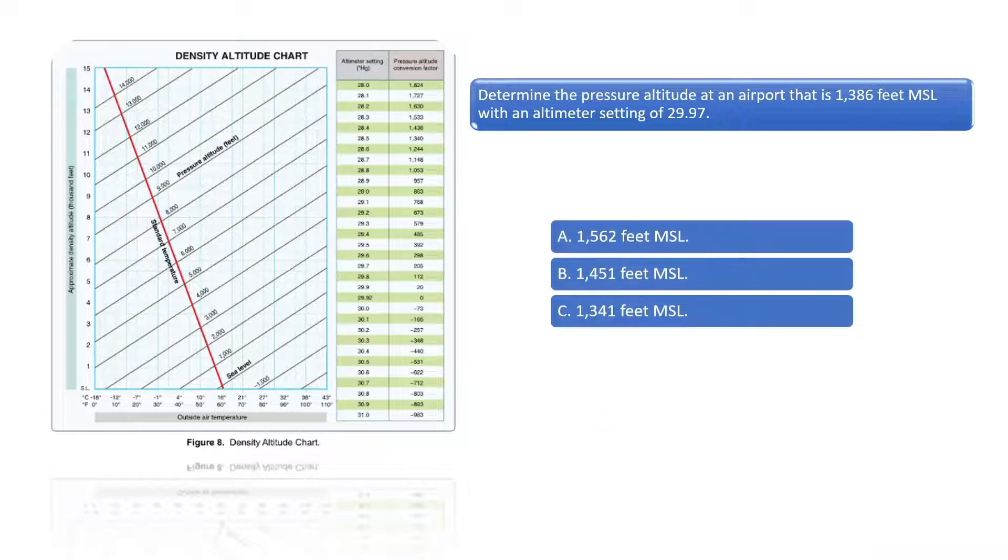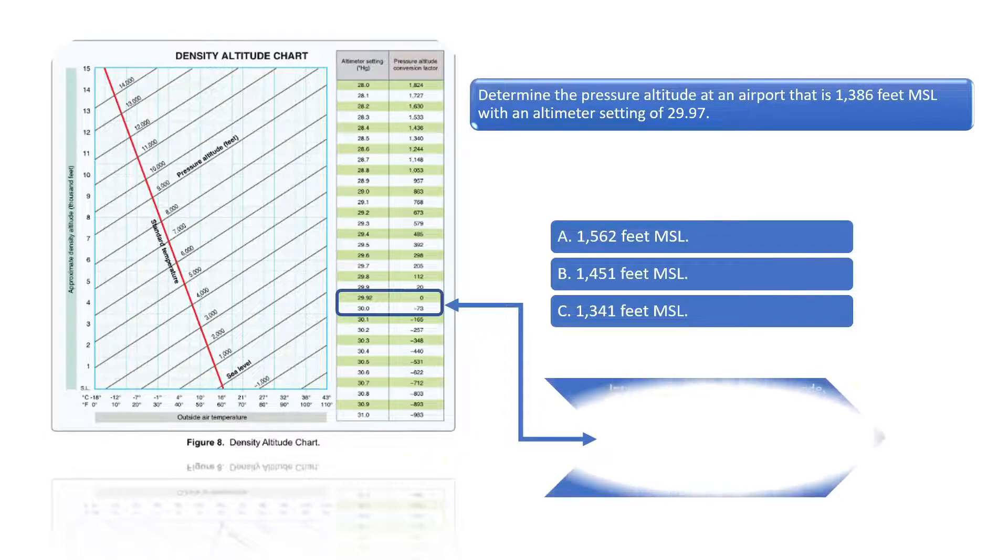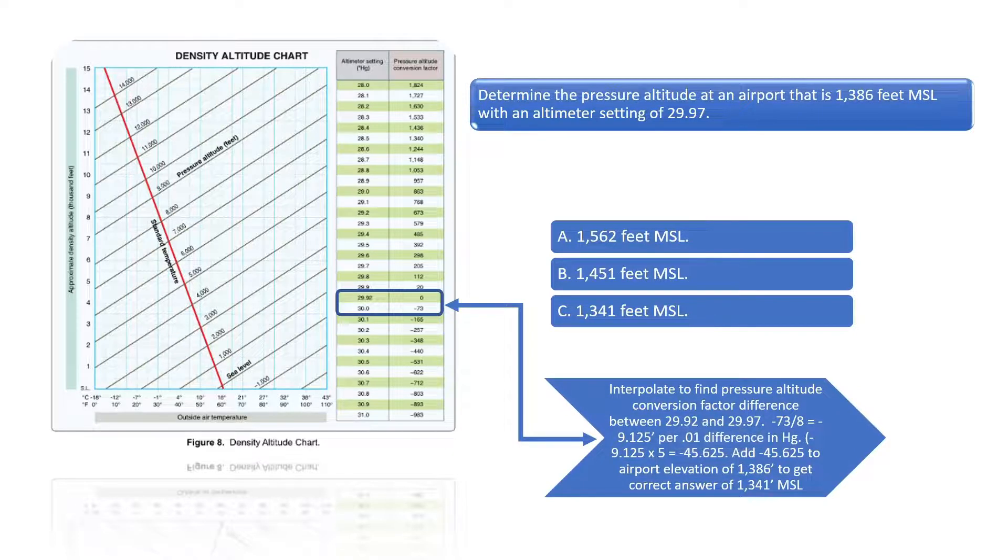To solve this problem, we need to interpolate to find the pressure altitude conversion factor. Notice the difference in the chart between the standard altimeter setting of 29.92 and 30. Since we know the difference between the two is negative 73 feet, we can divide negative 73 by 8 to get the pressure altitude conversion factor per 0.01 inches of mercury.